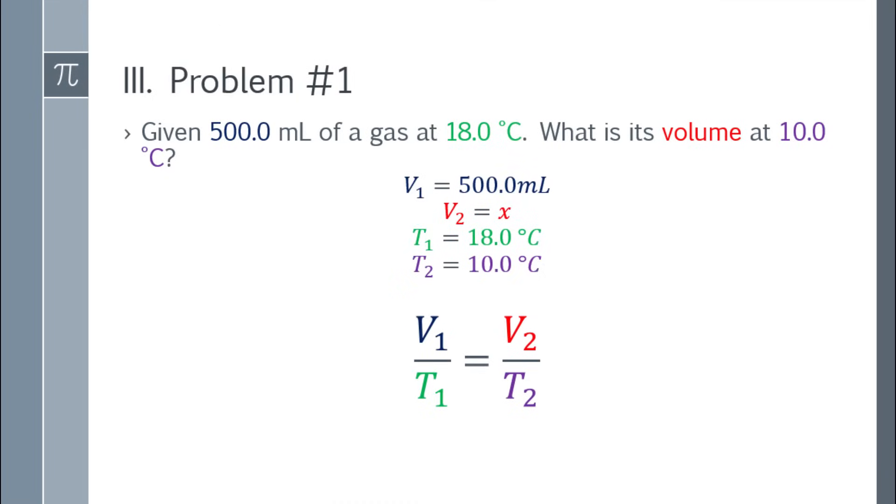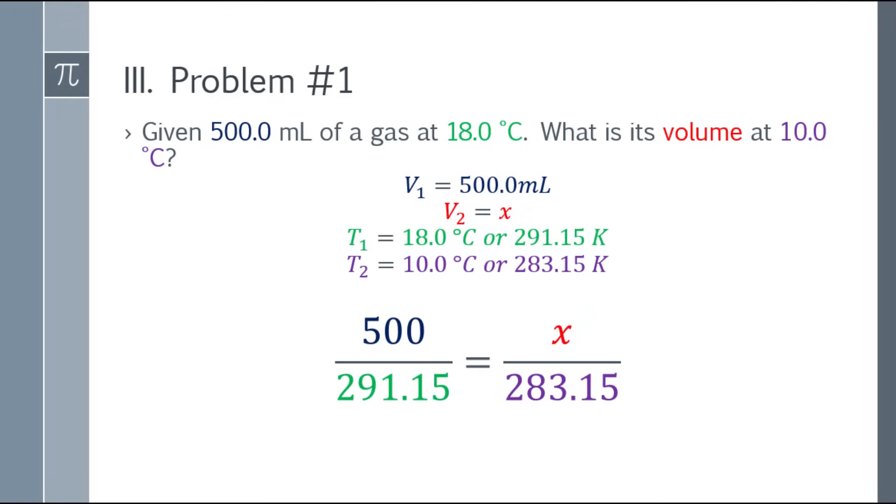Now let's apply the formula. We have V1 over T1 equals V2 over T2. Let's substitute into the formula. So we have 500 over 291.15 equals x over 283.15. Where did 291.15 and 283.15 come from? Remember, the given is in Celsius. When solving, it must be in Kelvin first. So that's why it became 291.15 and 283.15.